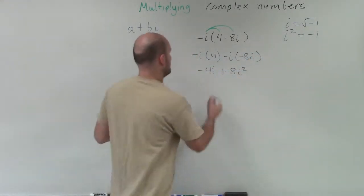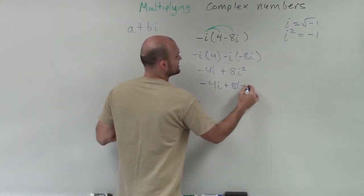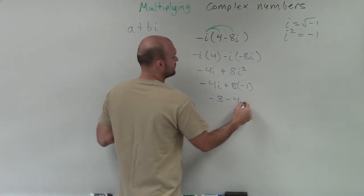Well, remember, we represent i squared as negative 1. So it turns out to negative 4 plus 8 times negative 1. Therefore, it turns into negative 8 minus 4i.